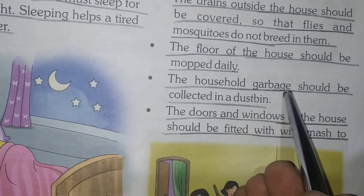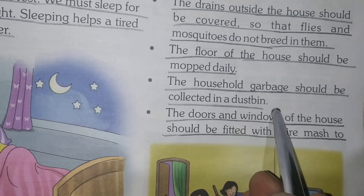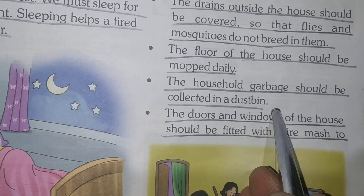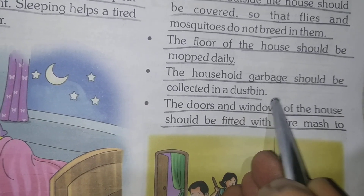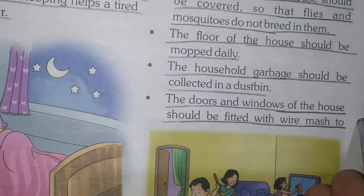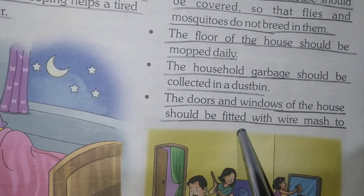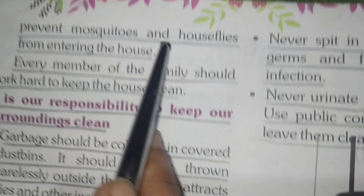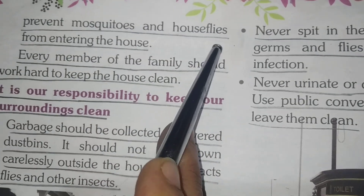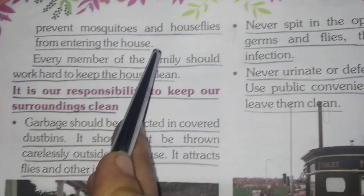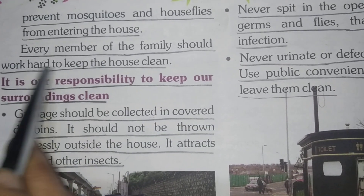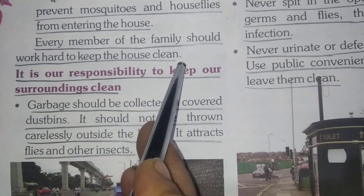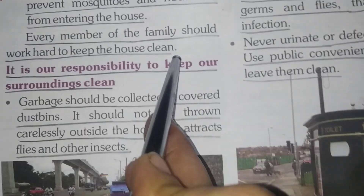The household garbage should be collected in a dustbin. We should throw the garbage or waste in the covered dustbin. The doors and windows of the house should be fitted with wire mesh to prevent mosquitoes and house flies from entering the house.